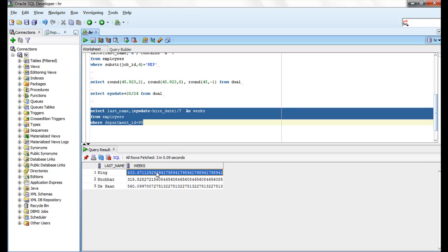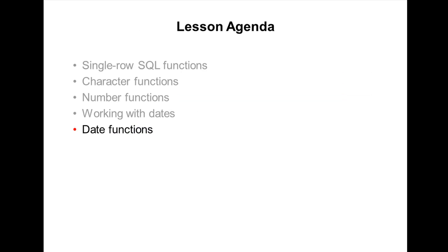So I'm getting three employees in department number 90: King, Kochhar, and De Haan. So they worked like 433 weeks, 355 weeks, 315 weeks, 560 weeks. Okay, so now date functions.